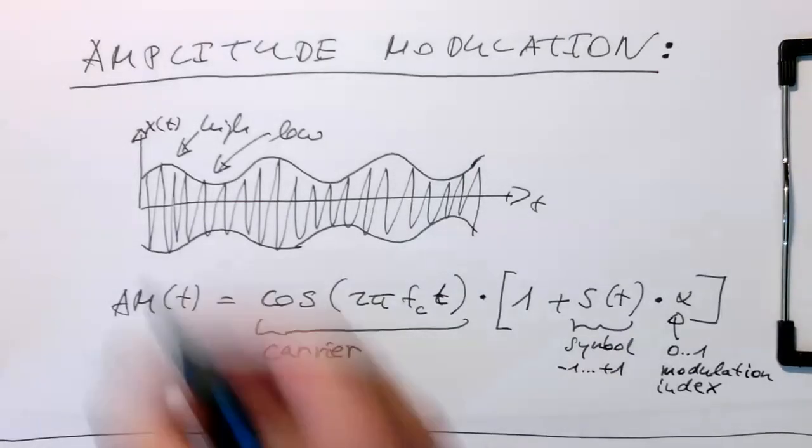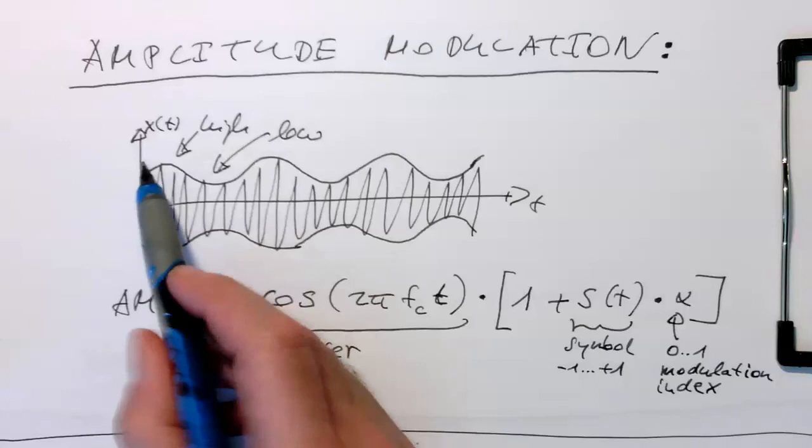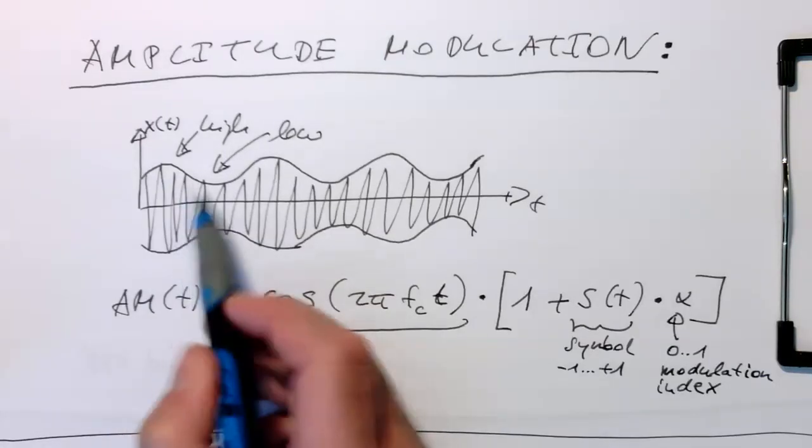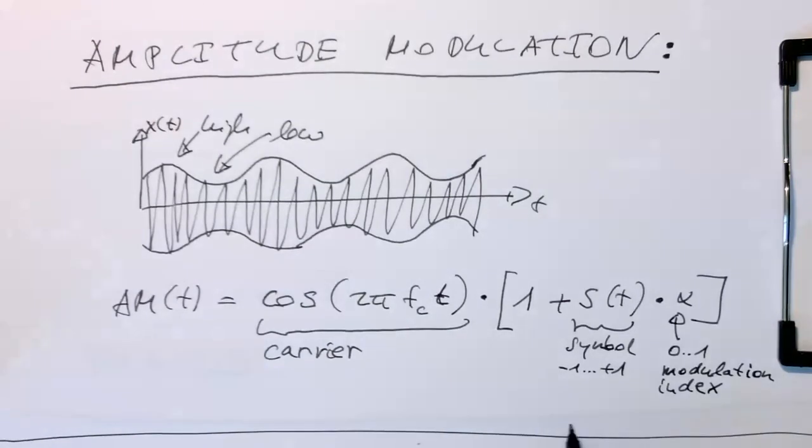And so how do we do this in a digital system? This obviously is just an analog system. So how do we do this as a digital stream? Obviously this one here will be symbols. So there will be something more like a square wave if we have something like zeros and ones.